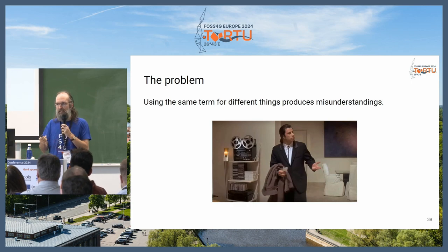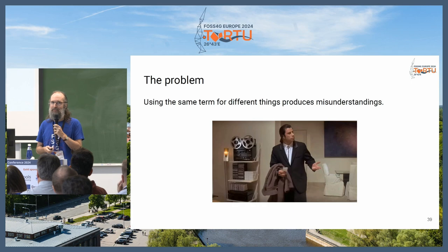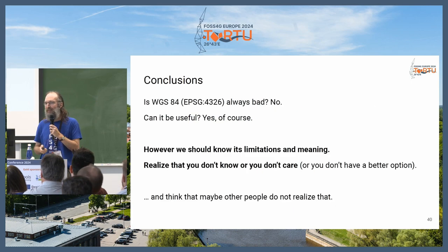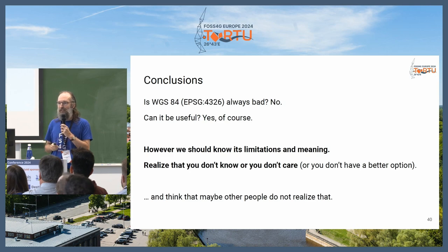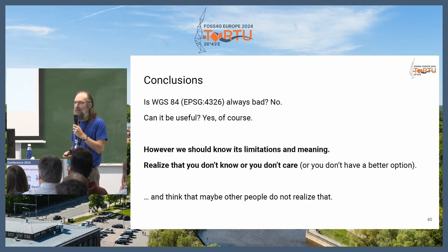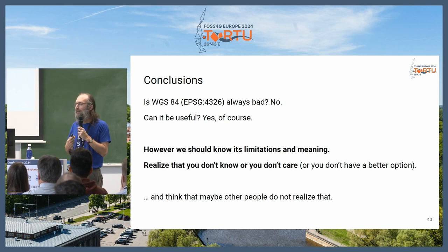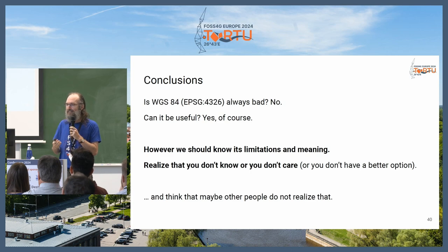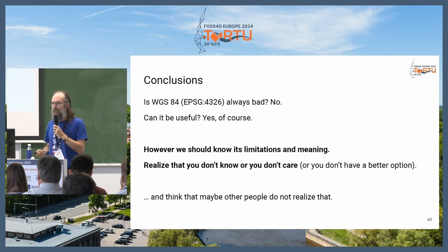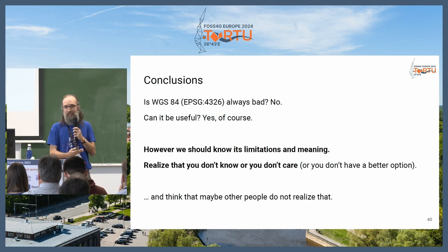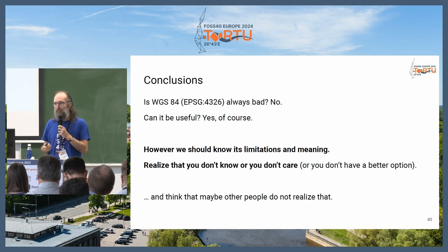Yesterday somebody was asking me how they can convert their WGS84 measurements from WGS84 to the national system. No — your WGS84 measurements are not in WGS84. So, do I say that WGS84 is always bad? No, absolutely not. Can it be useful? Yes, of course. But we should know the limitations, and we should know the meaning of WGS84. We should realize if we don't know or we don't care. I hope that after this talk you know, and you decide if you care or not. Sometimes you don't have a better option. Also, please think that maybe other people don't realize that — you're giving the data to somebody else, but those other people don't know what you were thinking.